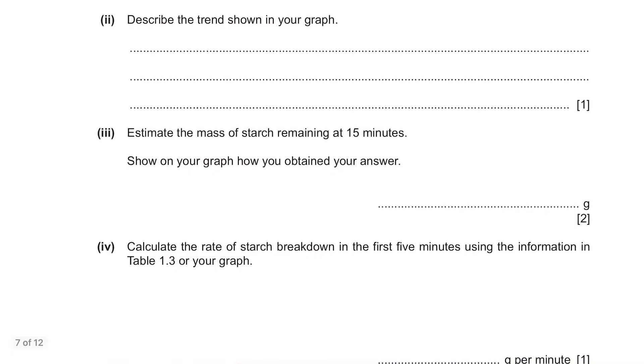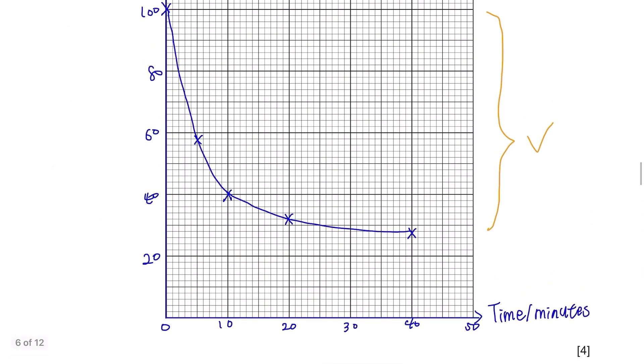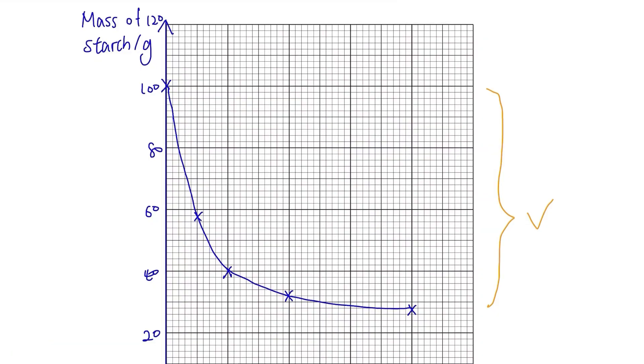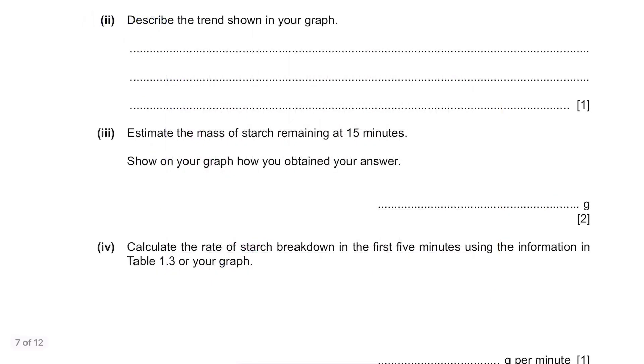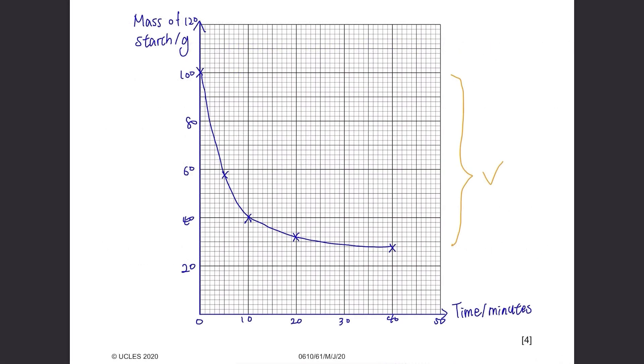Describe the trend shown in your graph. As time increases, the mass of starch remaining decreases and level off, meaning it's staying in almost the horizontal line. Estimate the mass of starch remaining at 15 minutes. Show on your graph how you obtained your answer. Find where 15 minutes is at in your graph. Draw a straight vertical line and read the point that it meets your graph. Leave these lines on your graph. They are marked as well.